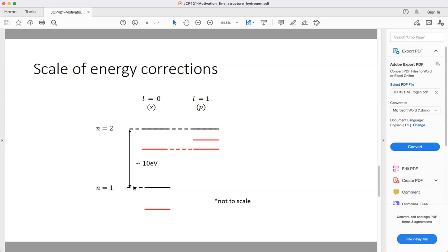For the spectrum of our unperturbed Hamiltonian, the difference between the n equals one and n equals two levels is on the scale of 10 electron volts. If you look at the discrepancies between the experimentally observed values and those theoretically predicted, they are several orders of magnitude smaller.